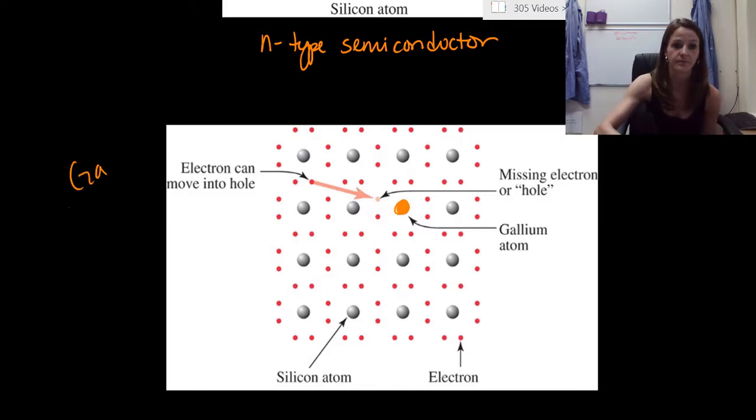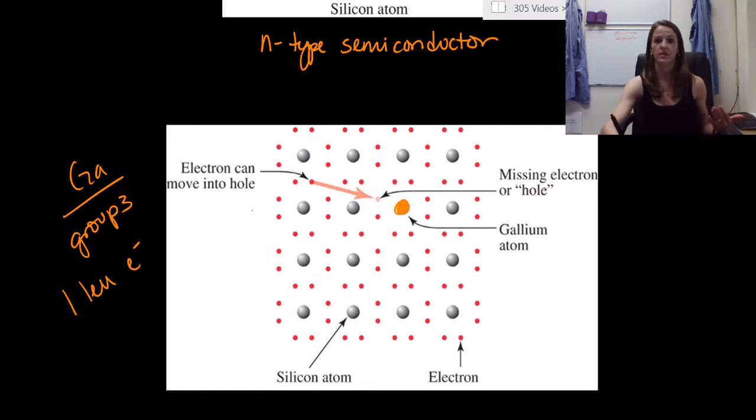So let's write this out. Gallium, it is in group three, so it has one less electron, always comparing to silicon. So instead of having an electron right here where it should, where the silicon atom does, we have what is called a hole.